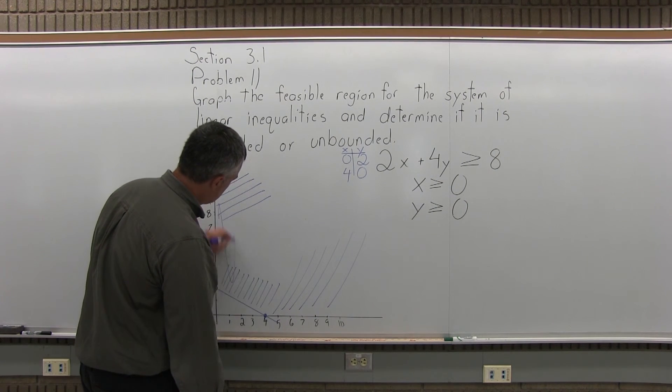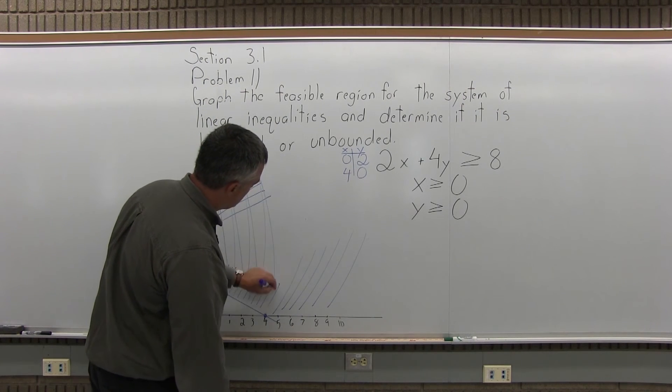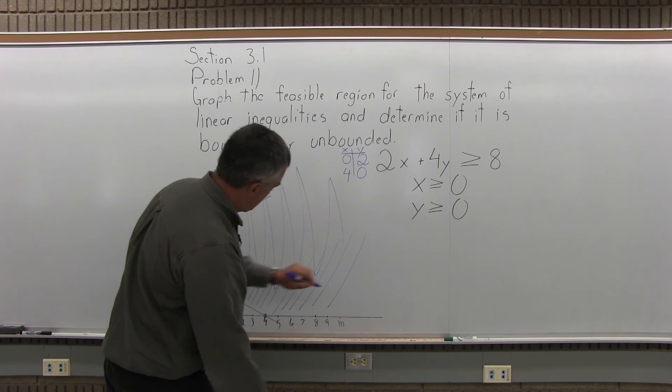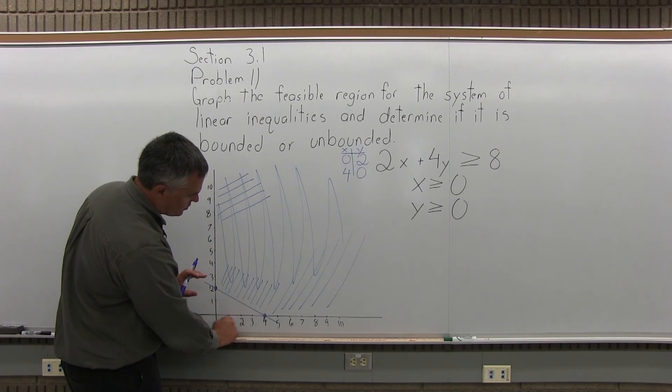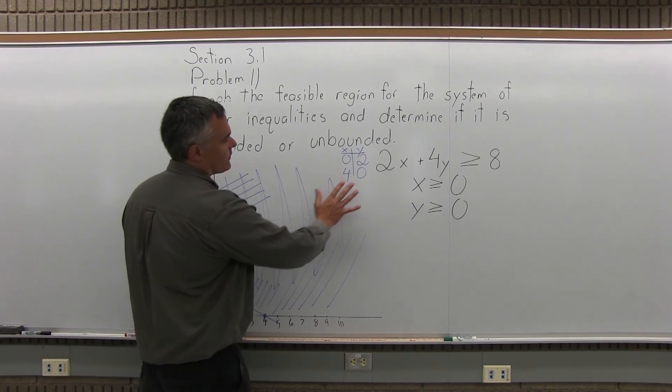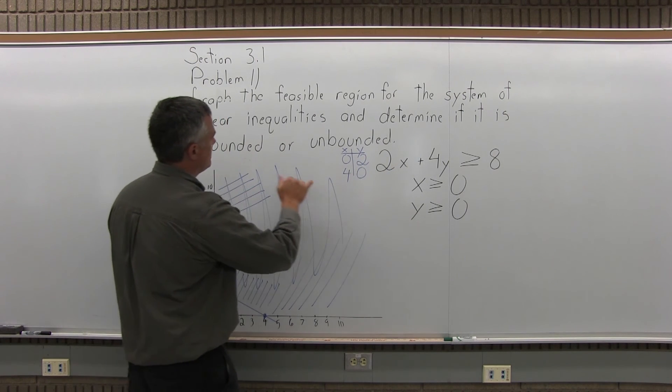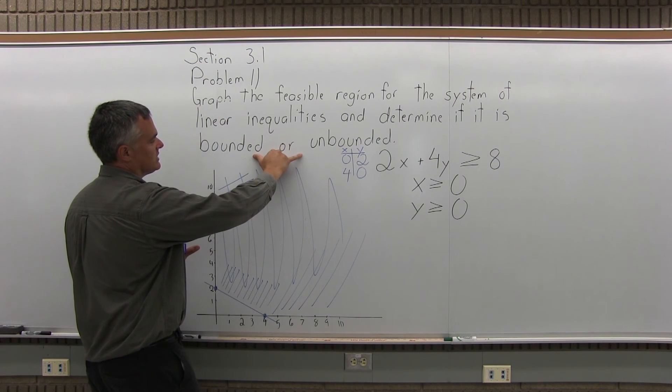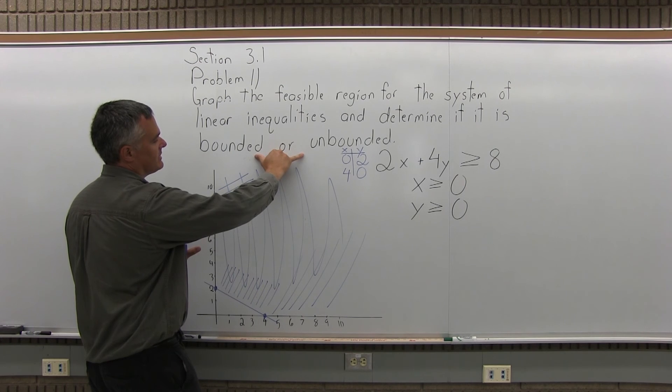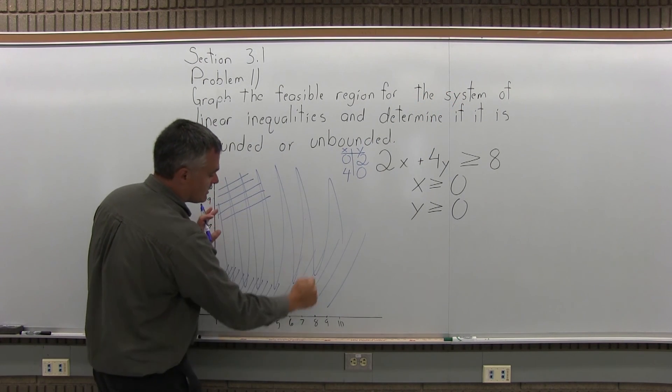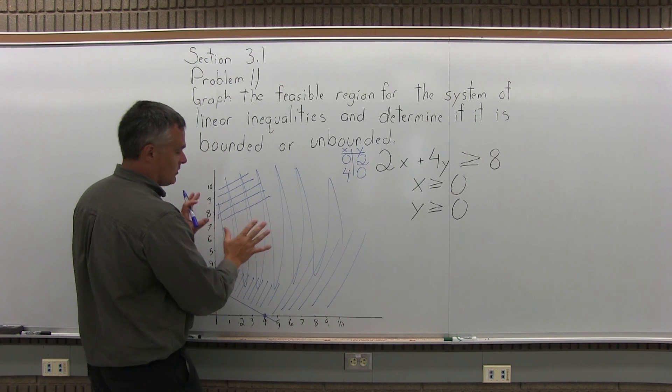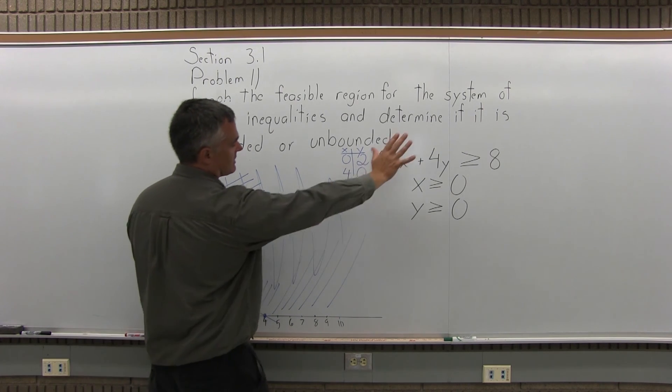The feasible region winds up being everything to the upper right except for this little corner in the bottom. You can go out further and further with no limits. So is your feasible region bounded or unbounded? It's unbounded because it goes forever. To be bounded it has to be completely enclosed finite area, which is not the case. This is unbounded.